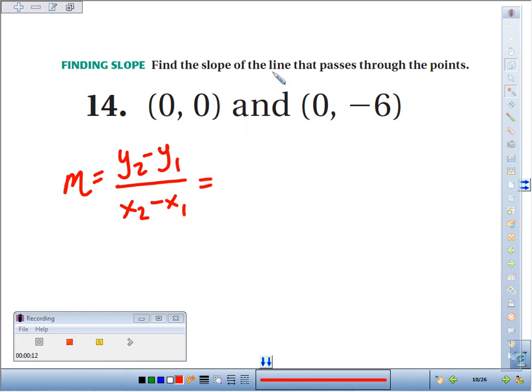It doesn't matter if we go 0 minus negative 6 or negative 6 minus 0, as long as we're consistent with our x's. So here we go. We'll go negative 6 minus 0. I'm going to choose that direction. Same direction for the x's, 0 minus 0.